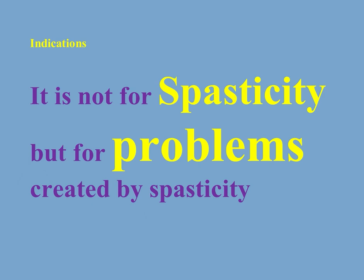In the example we saw earlier, although there was spasticity in the hamstring muscles, this on its own is not an indication for botox. But if this spasticity reduces the step length for the child and reduces his gait efficiency, that is an indication for botox injection.